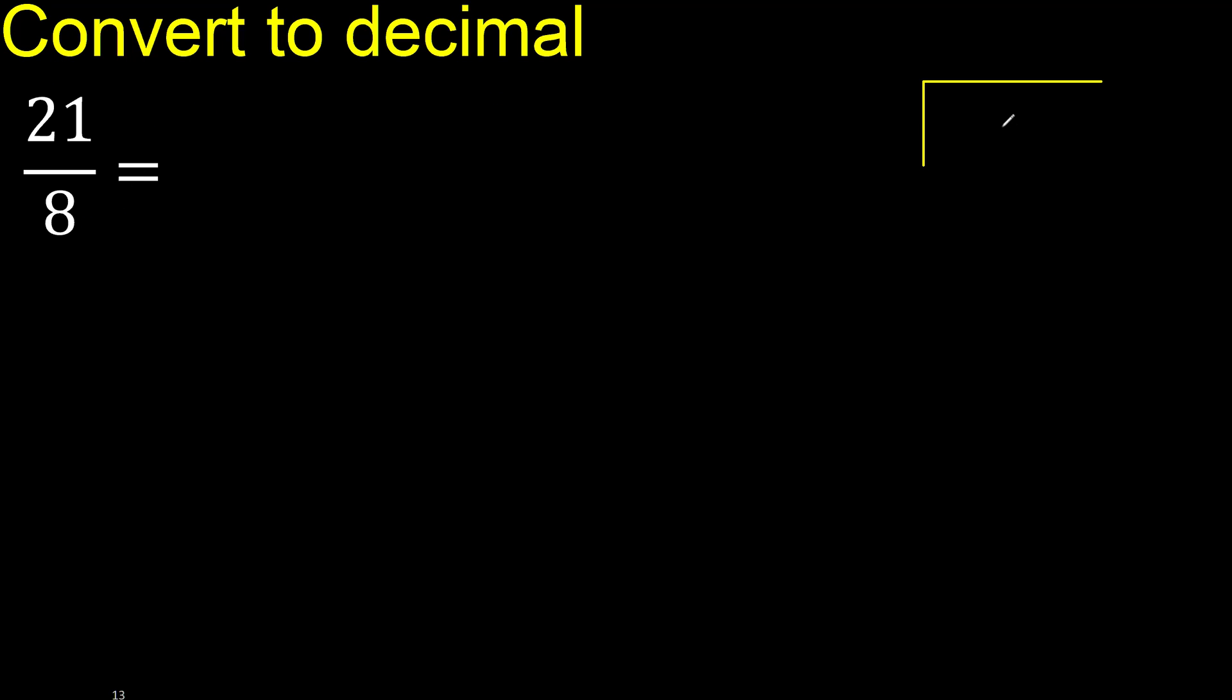21 divided by 8. 2 is less, therefore next, 21. 21 is not less. Wait, 21. 8 multiplied by which number is nearest to 21 but not greater?